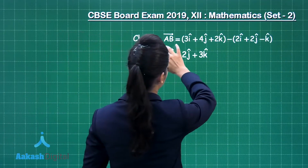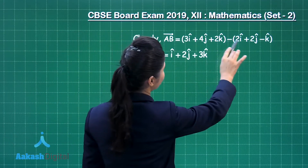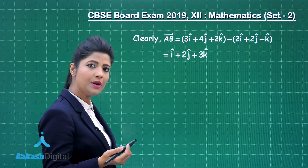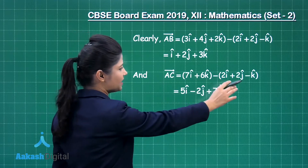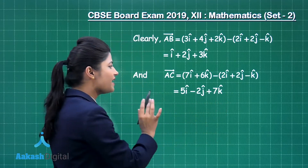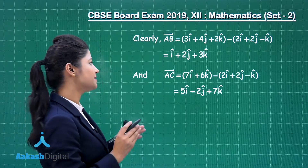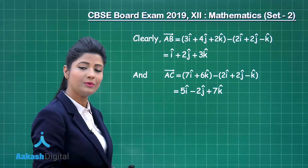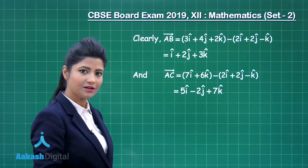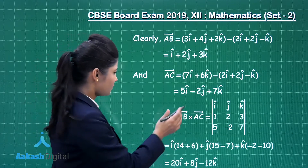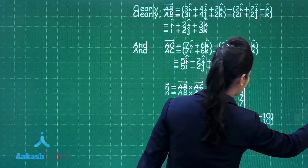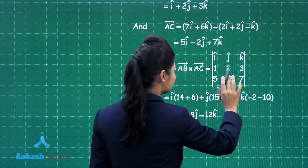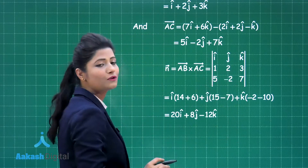Let us obtain vector AB, which is given by OB minus OA. The difference gives i + 2j + 3k — this is AB vector. Similarly, OC minus OA simplifies to 5i - 2j + 7k — this is AC vector. Now with AB and AC, we obtain N vector where N = AB × AC. We set up the determinant with rows: (i, j, k), (1, 2, 3), (5, -2, 7) and expand along the first row.